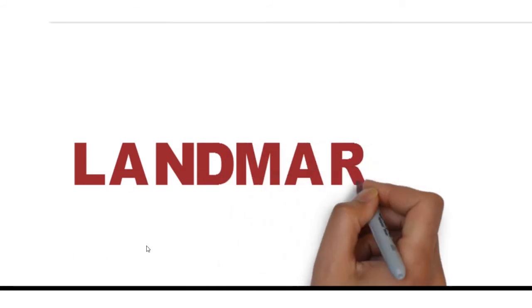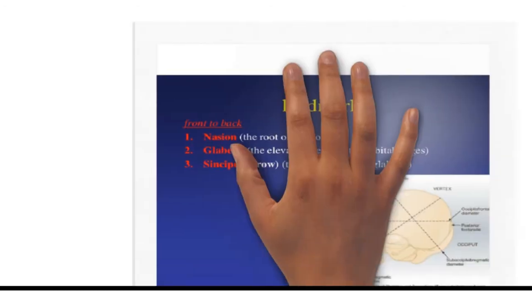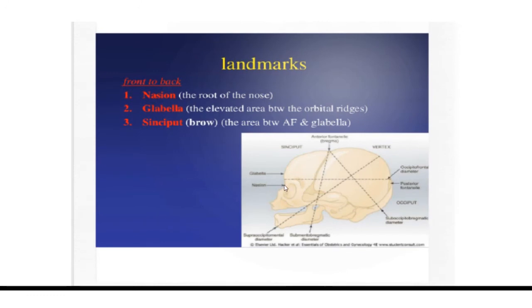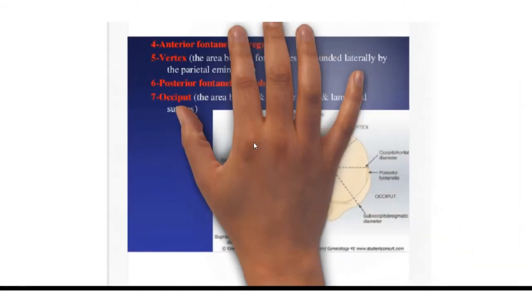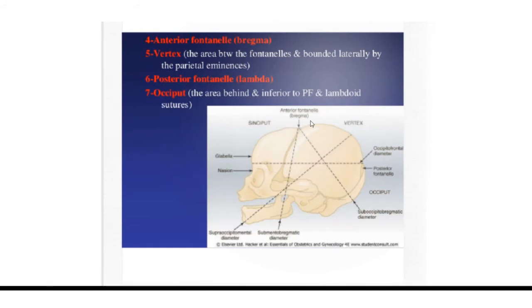To know the diameters well, we first need to know the landmarks. The nasion is the root of the nose. The glabella is the elevated orbital ridge above it. The brow, or sinciput, is the area between the glabella and the anterior fontanelle. Moving posteriorly: the anterior fontanelle or bregma, then the vertex, then the posterior fontanelle, and finally the occiput. Based on these landmarks we define the various diameters of the fetal skull.